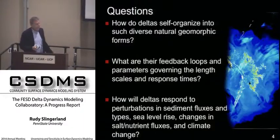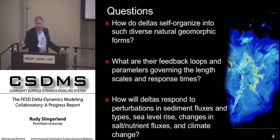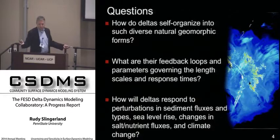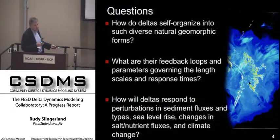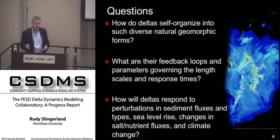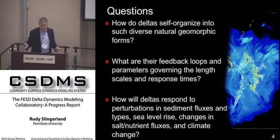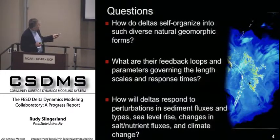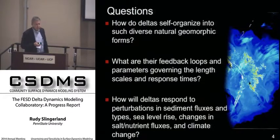The first question was: how do they self-organize out of this turbulent, expanding plane jet — the quintessential statistical process — into this beautifully evolved set of forms with characteristic length scales? What are the feedback loops that set these in the response times of the system? And ultimately, when we develop confidence there — and of course this all has to happen in five years because that's the length of the grant — how will they respond to perturbations in climate change, sea level rise, and so on?